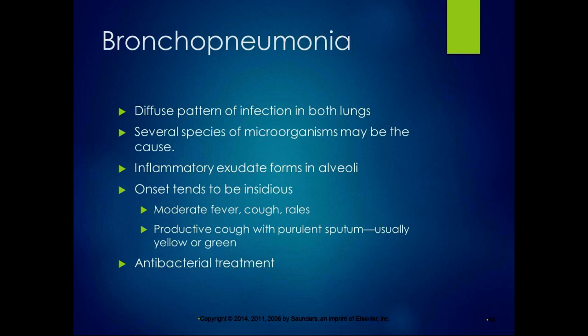Bronchopneumonia is a diffuse pattern of infection in both lungs. Several species of microorganisms may be the cause, so a culture and sensitivity of the sputum is needed to identify the microorganism and determine how to treat it. Inflammatory exudate forms in the alveoli, interfering with gas exchange. Onset tends to be insidious — instead of high fever, you get a moderate fever, cough, and rales. People may dismiss it as a cold, but if they're coughing up yellow or green sputum, they need antibiotics matched to culture results.